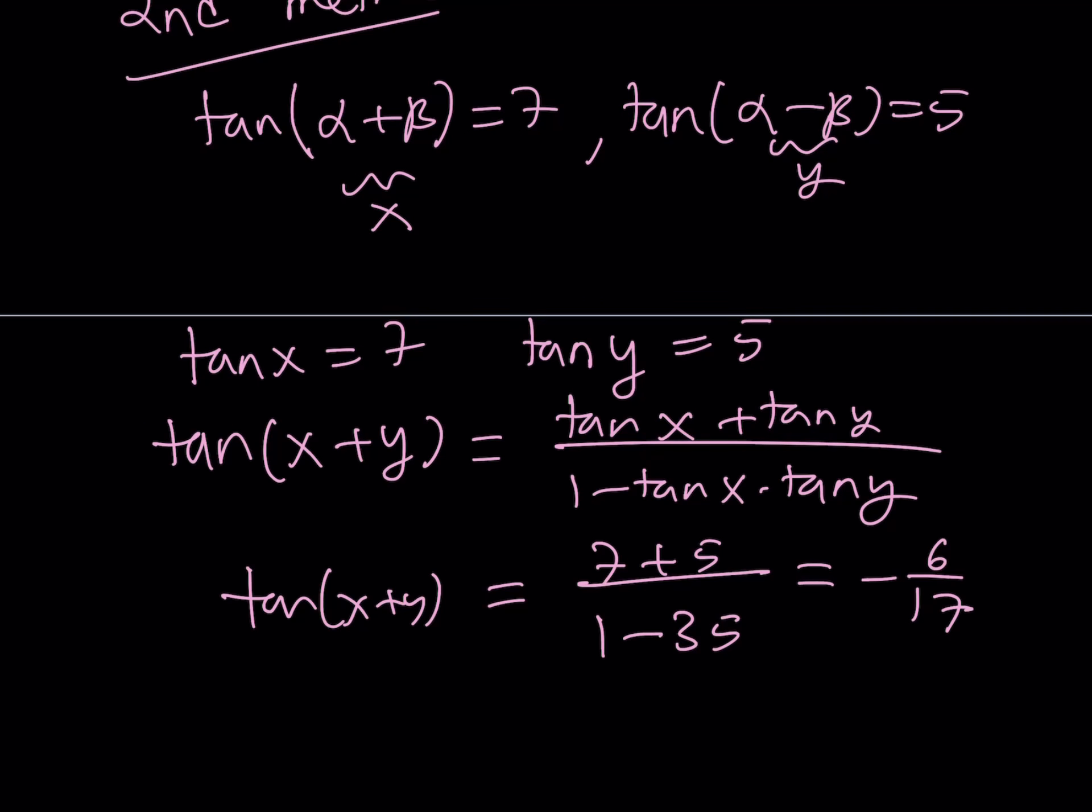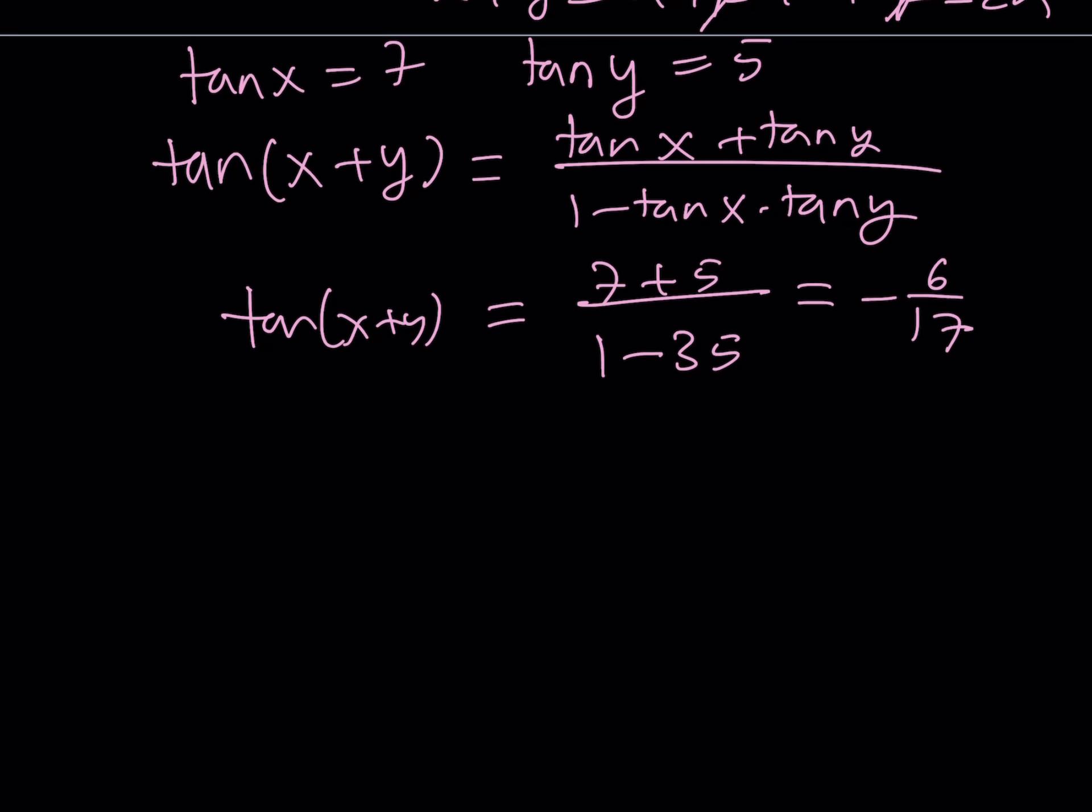So what is X plus Y? X plus Y is alpha plus beta plus alpha minus beta. Boom. You can cancel out the betas, and you end up with 2 alpha. So this is tangent 2 alpha, which is equal to negative 6 over 17.